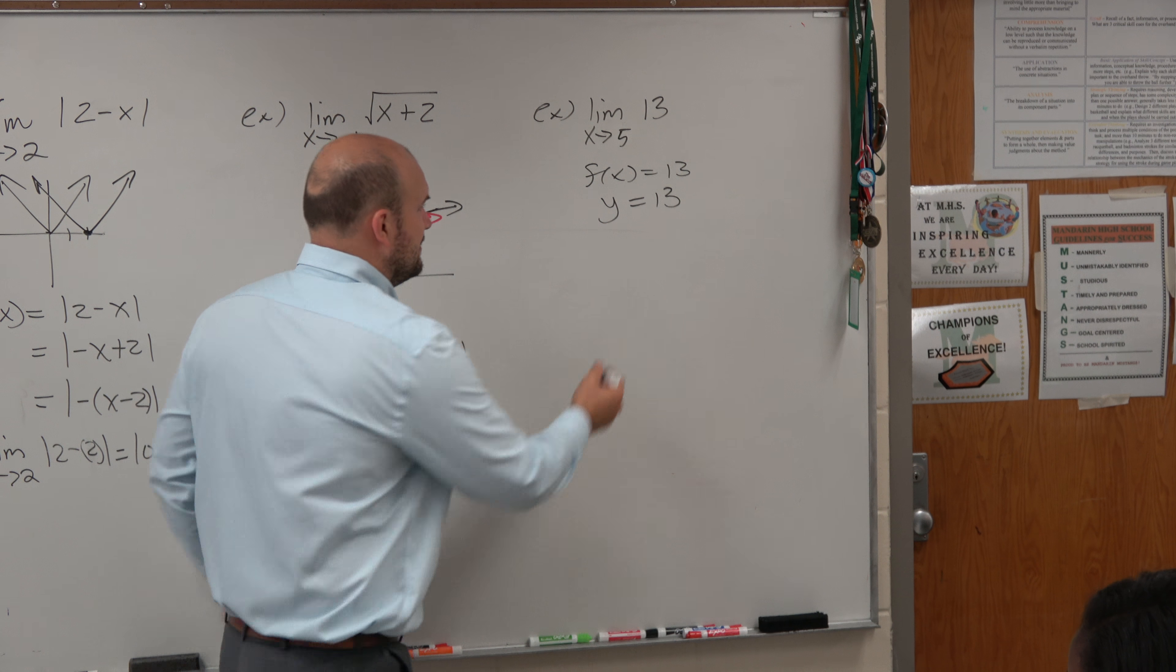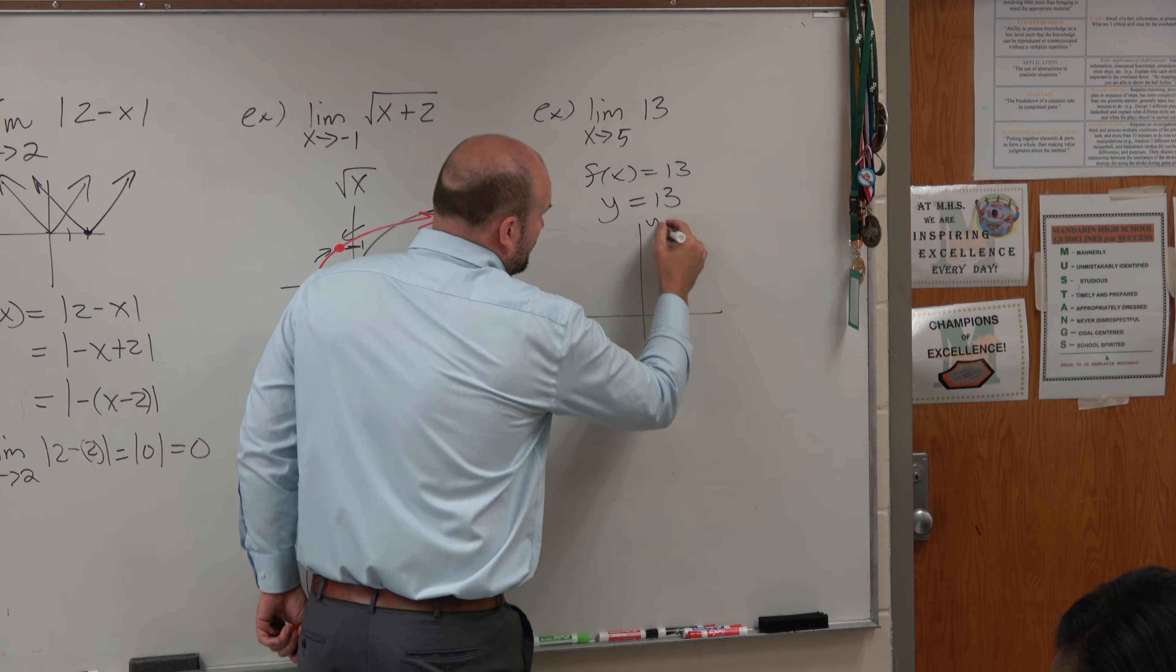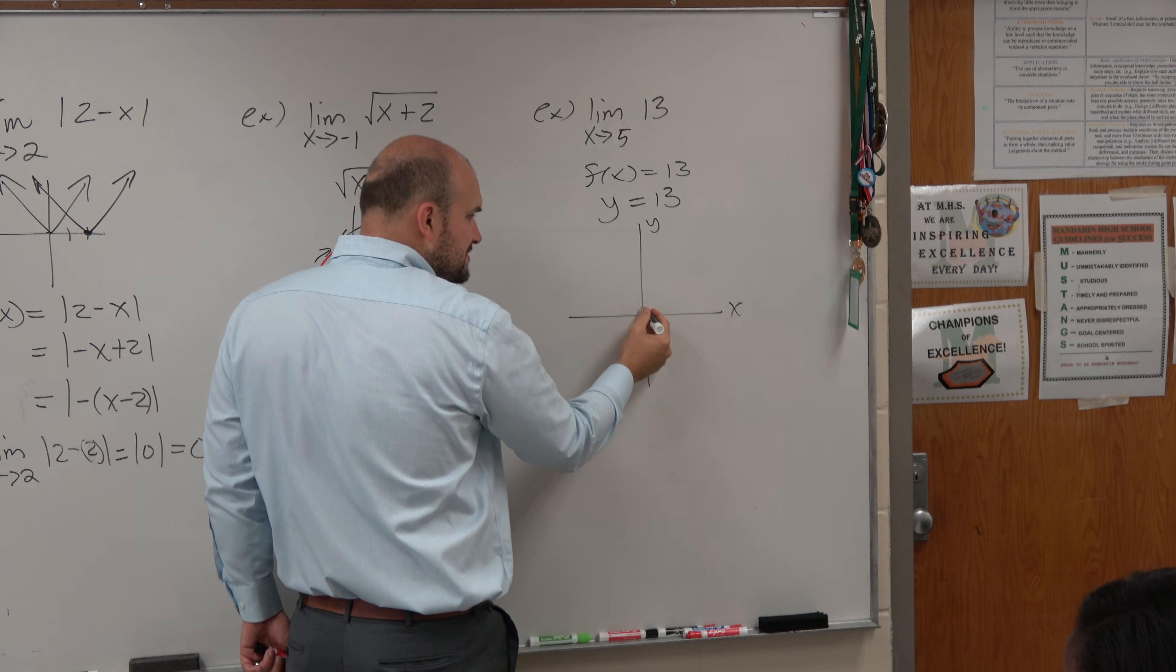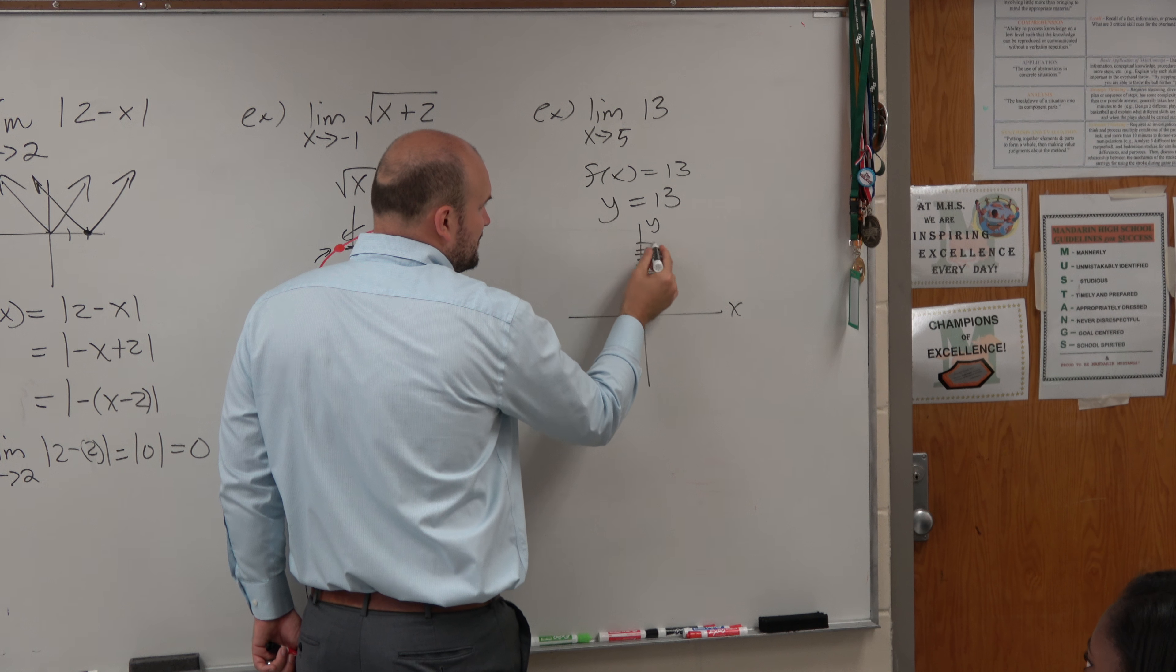It's just the horizontal line, right? Because here's your y, here's your x. y equals 13, so you go up to 13. 1, 2, 3, 4, 5, 6, 7, 8, 9, 10, 11, 12, 13.